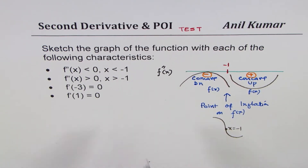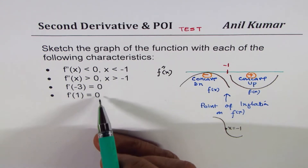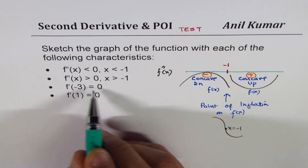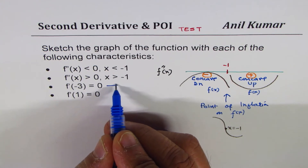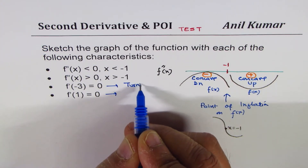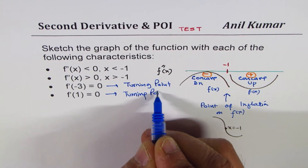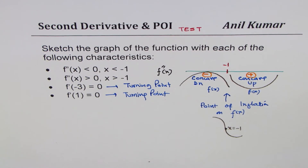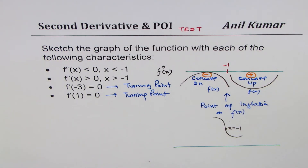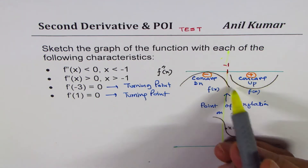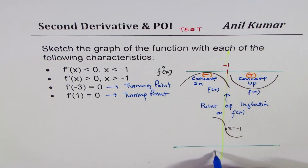Now let's analyze the first derivative. We are given two points at which the first derivative is zero, which means we have turning points at x = -3 and x = 1. A turning point could be a maximum or minimum. To decide, let's overlap this with the concavity information: the graph is concave down to the left of minus 1 and concave up to the right of minus 1.